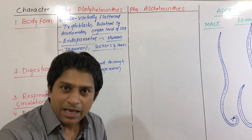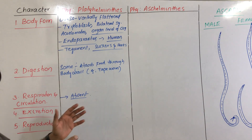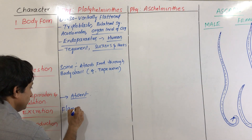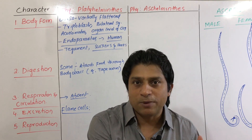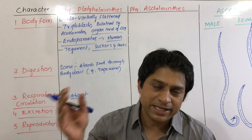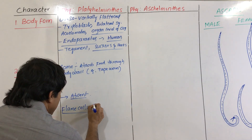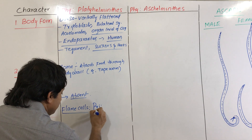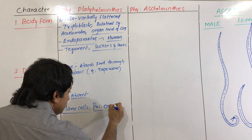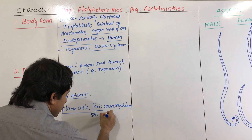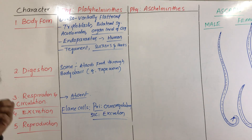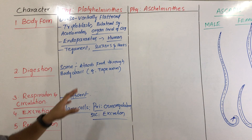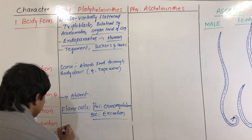Excretion in Platyhelminthes is performed with the help of protonephridia. The type of protonephridia found here are called flame cells or flame bulbs. The primary function of protonephridia is osmoregulation, and secondarily they perform excretion.